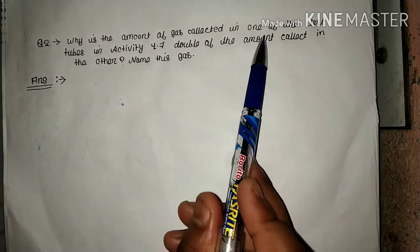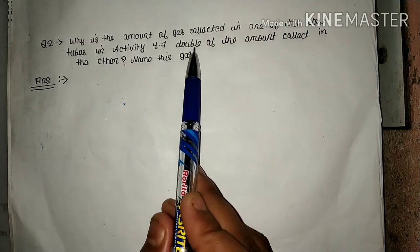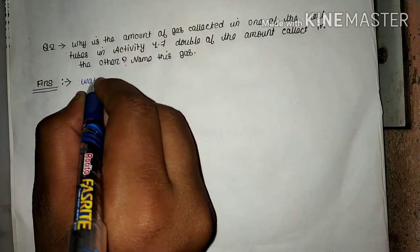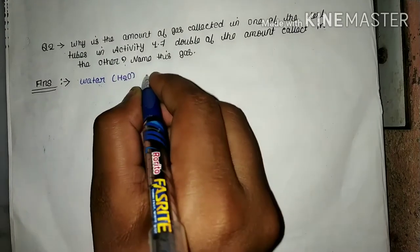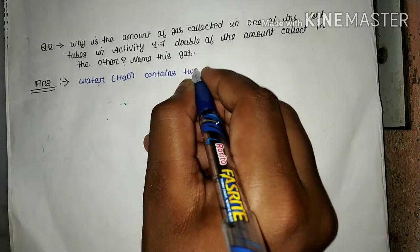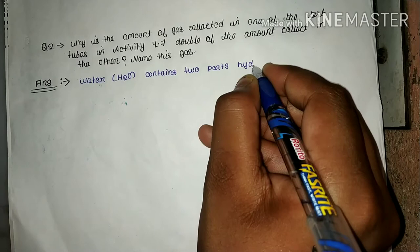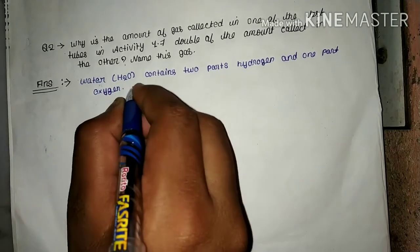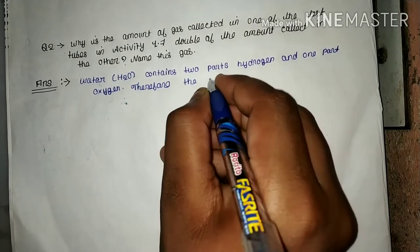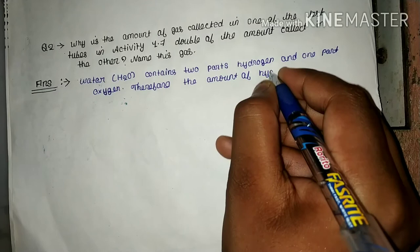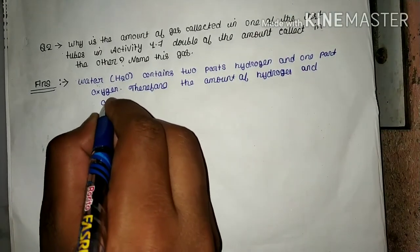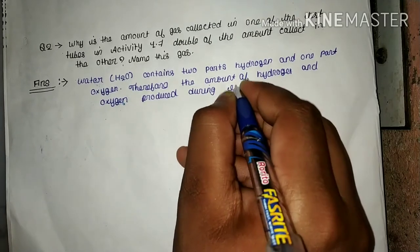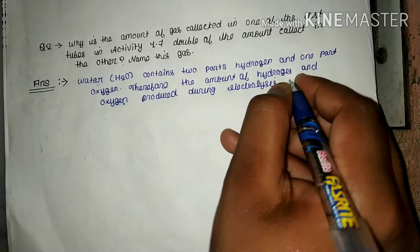Why is the amount of gas collected in one of the test tubes in Activity 1.7 double the amount collected in the other? The answer is: water, H₂O, contains two parts hydrogen and one part oxygen. Therefore, the amount of hydrogen and oxygen produced during electrolysis of water is in a ratio of 2 to 1.